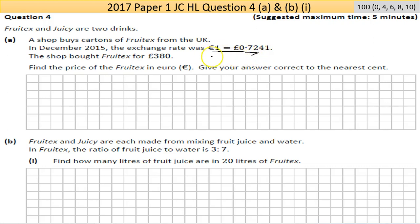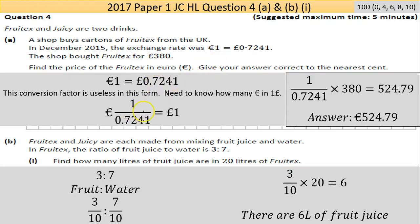Dividing 0.7241 by itself gives you one pound equals 1 divided by 0.7241. Instead of going decimal, I'm going to use that statement to avoid rounding errors. Multiplying that — the amount of euro in one pound — by 380 pounds tells you how many euro the Fruitex cost. The answer is €534.79, rounded to the nearest cent.